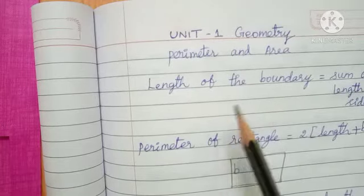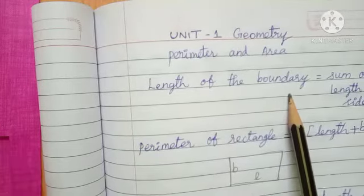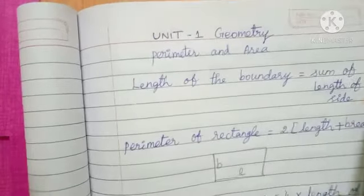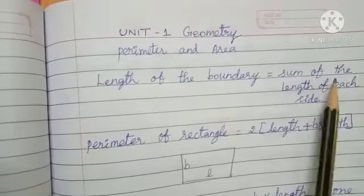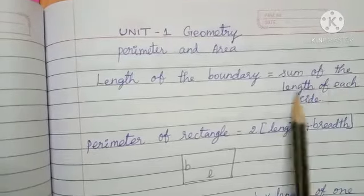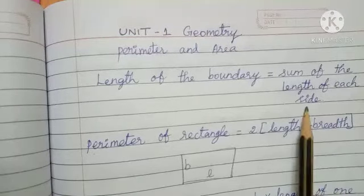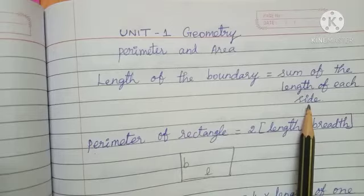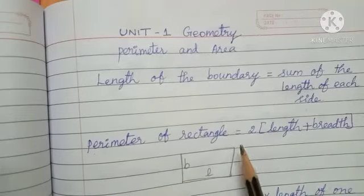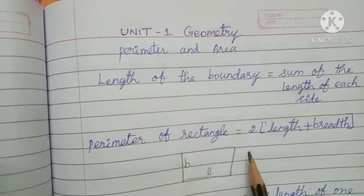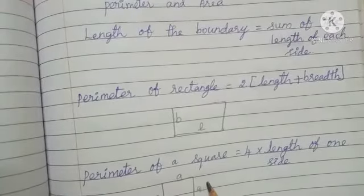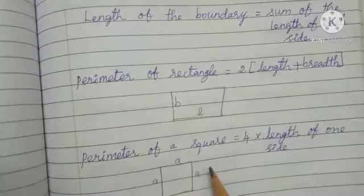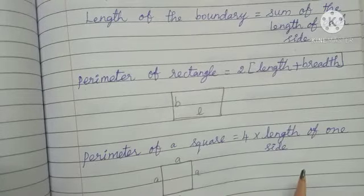Length of a boundary: the length of the boundary is equal to the sum of the length of each side. First, find out any one shape given to you. Here, shapes for use are only rectangle and square — there are two kinds of shapes given here. So find the perimeter for it.